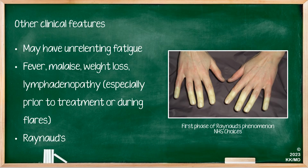In terms of other clinical features that can be helpful, particularly in Station 5 of PACES: fatigue is probably the commonest presenting complaint in lupus patients. You can have weight loss and fever — it is one of the most important causes to exclude in pyrexia of unknown origin. You can have lymphadenopathy, especially prior to treatment or immunomodulatory drugs. You can also have Raynaud's, which is a condition where the digits get triphasic colour changes from white to blue to red when exposed to cold.